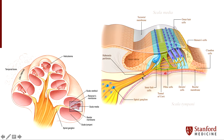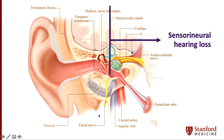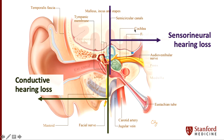We generally classify hearing loss into two different types: sensorineural and conductive. Sensorineural hearing loss refers to losses of the cochlea, the hearing nerve, or the central auditory pathways, whereas conductive hearing loss describes issues affecting the ear canal or the middle ear. For today's talk, we'll mostly be discussing sensorineural hearing loss, because the size and shape of the middle ear, the ossicles, and the tympanic membrane are fairly conserved between the two sexes.